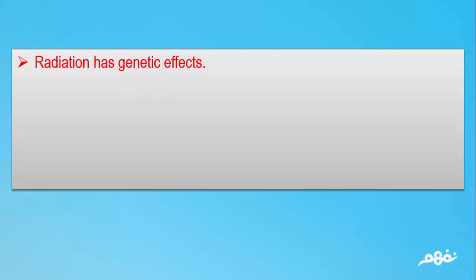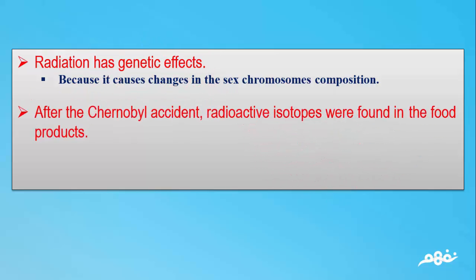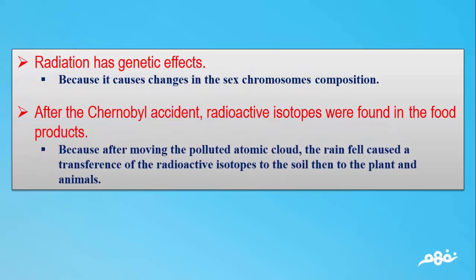Number 9: Radiation has genetic effects. The answer: Because it causes changes in the sex chromosome's composition. Number 10: After the Chernobyl accident, radioactive isotopes were found in the food products. The answer: Because after moving the polluted atomic cloud, the rain fell, causing a transference of the radioactive isotopes to the soil, then to the plants and animals.